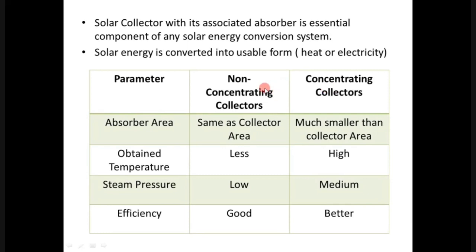We will now discuss non-concentrating and concentrating collectors in differentiation form using specific parameters. The first parameter is absorber area. In non-concentrating collectors, the absorber area is the same as the collector area. In concentrating collectors, the absorber area is much smaller than the collector area.